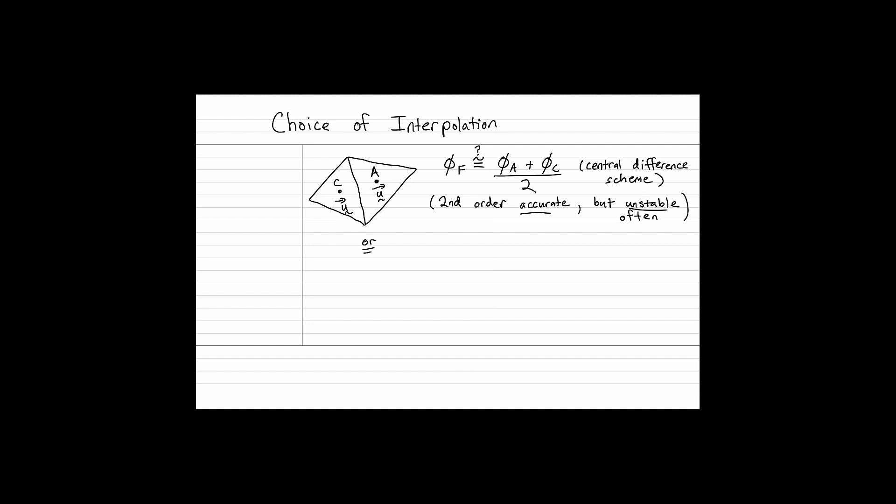The reason why it's unstable has to do with the flow. So actually, because this is a flow problem, it tends to be that this element actually affects the value over here more than the one over here because of the convection.